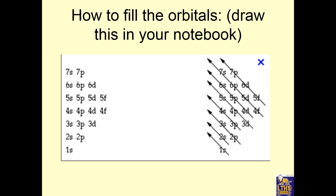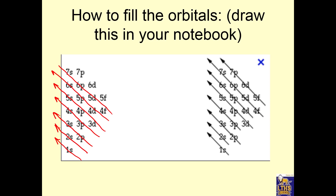Let's look at a diagram that will help you know how to fill up those orbitals — kind of a way to memorize it. Start by writing this down; make sure you line these up and put the numbers in the right spot. Then you draw diagonal arrows, and the arrows show which direction to fill the orbitals. The 1s fills first, then 2s, then 2p and 3s, then 3p and 4s, then 3d, 4p, 5s, then 4d, 5p, 6s, then 4f, 5d, 6p, 7s, then 5f, 6d, 7p. You should be able to draw that and use it.